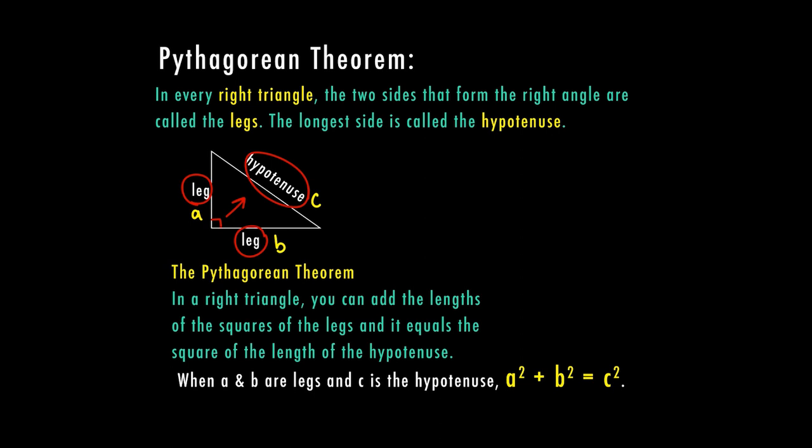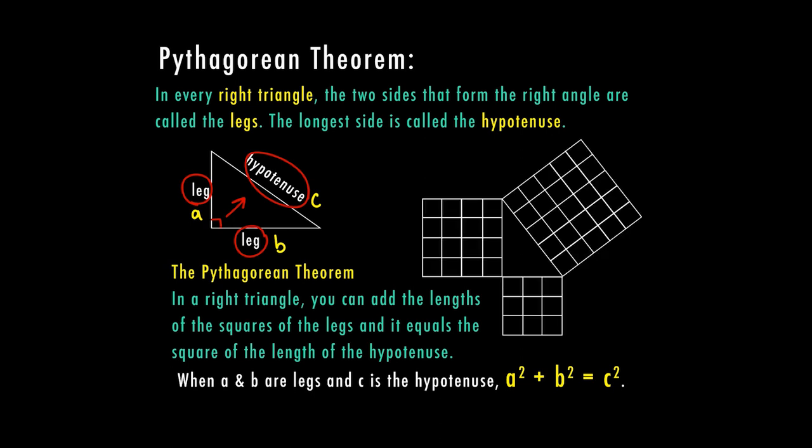And when you're talking about Pythagorean Theorem, this is one of the most common examples or pictures you're going to see to represent this. So if I were to take the length of this side on the bottom, that would be a length of three. If I take the length of this other leg, that one's four, and the length of the hypotenuse is five. So what it's saying is three squared, which is nine, plus four squared, which is 16, equals five squared, which is 25.